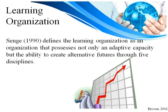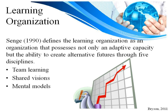Senge (1990) defines the learning organization as one that possesses not only an adaptive capacity, but also generativity — the ability to create alternative futures. Senge identifies five disciplines: team learning, an emphasis on learning activities of the group; shared visions, the ability to unearth shared pictures of the future that foster genuine commitment rather than compliance; mental models, deeply held internal images of how the world works; personal mastery, continually clarifying and deepening personal vision, focusing energies, developing patience, and seeing reality objectively — which follows right along with Daniel Pink's work.